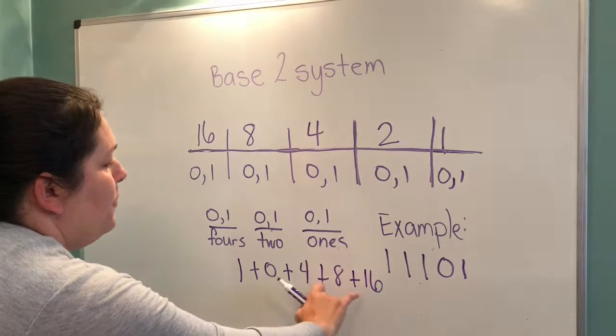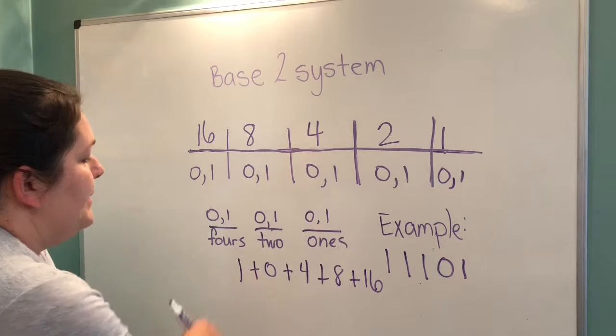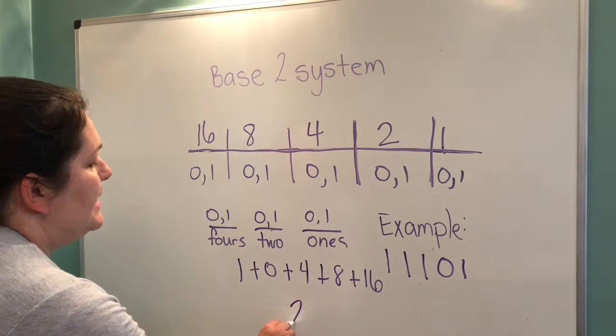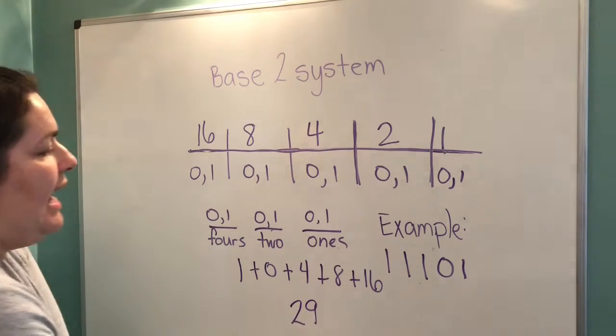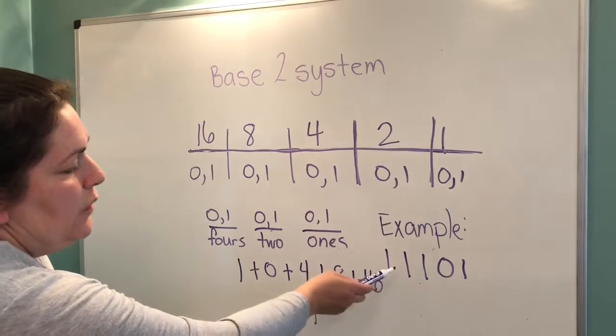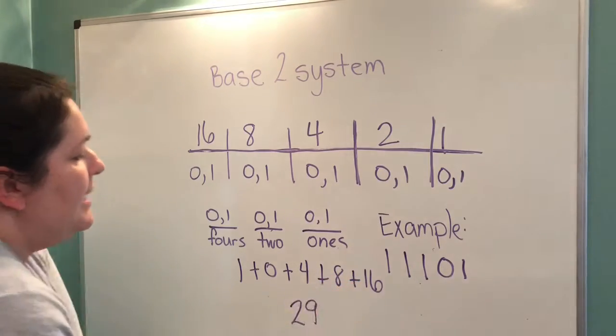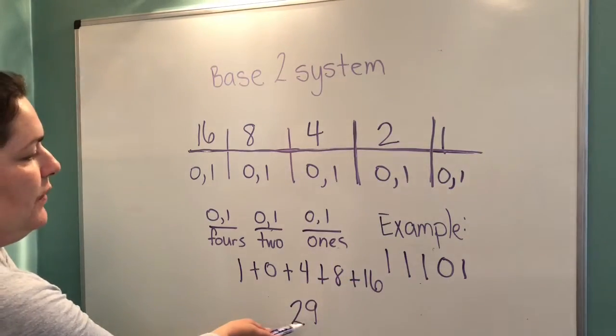So, 16 and 4 is 20 plus 8 is 28 plus 1. In our system, it would be 29. So, this is base 2, 1, 1, 1, 0, 1. And this is base 10, 29.